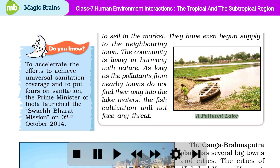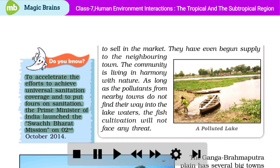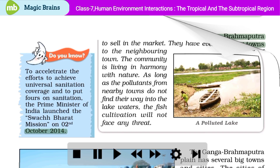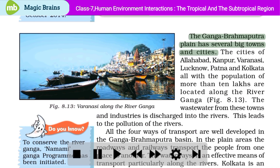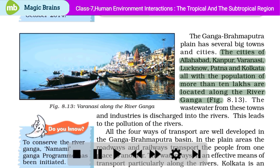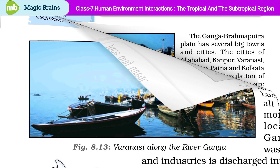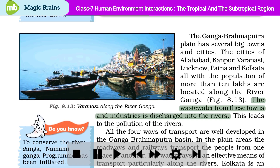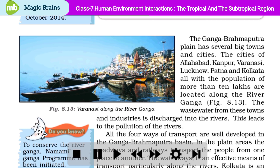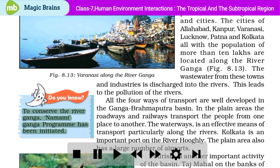To accelerate the efforts to achieve universal sanitation coverage, the Prime Minister of India launched the Swachh Bharat Mission on 2nd October 2014. The Ganga Brahmaputra Plain has several big towns and cities. The cities of Allahabad, Kanpur, Varanasi, Lucknow, Patna and Kolkata, all with a population of more than 10 lakhs, are located along the river Ganga. The wastewater from these towns and industries is discharged into the rivers, leading to pollution. To conserve the river Ganga, the Namami Ganga program has been initiated.